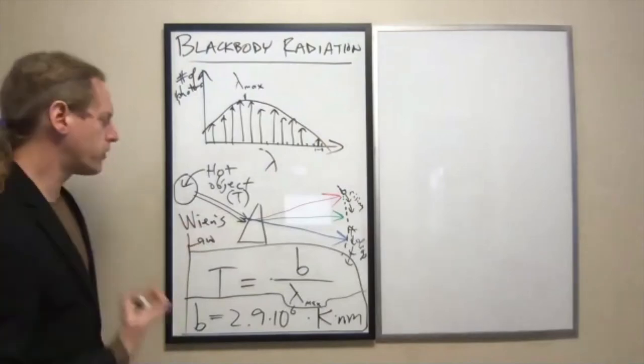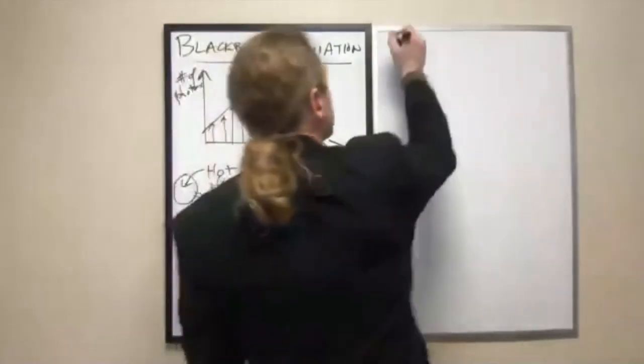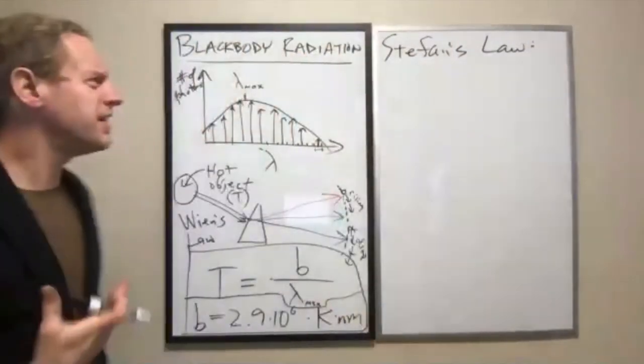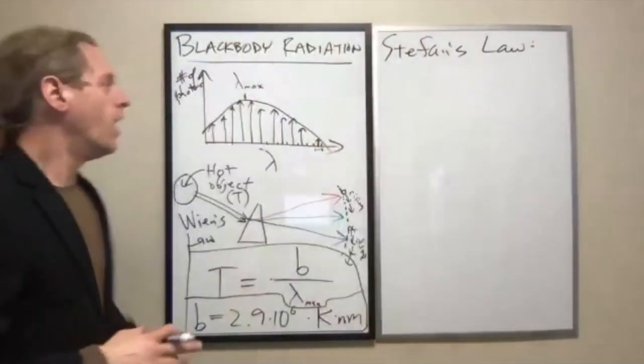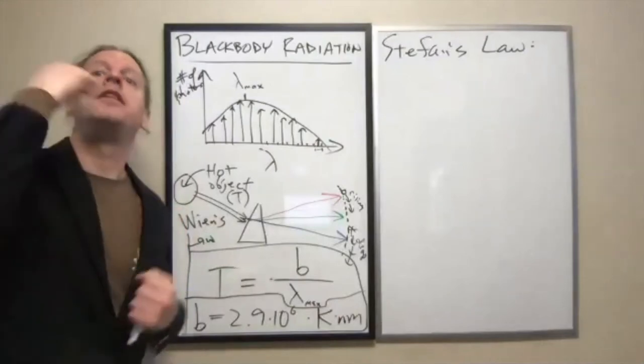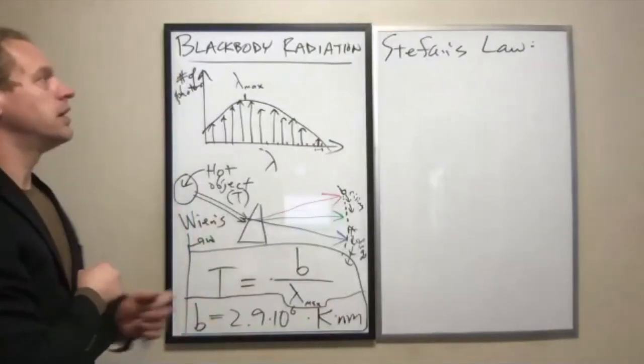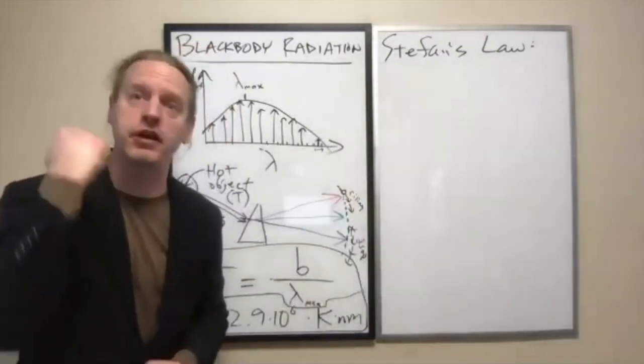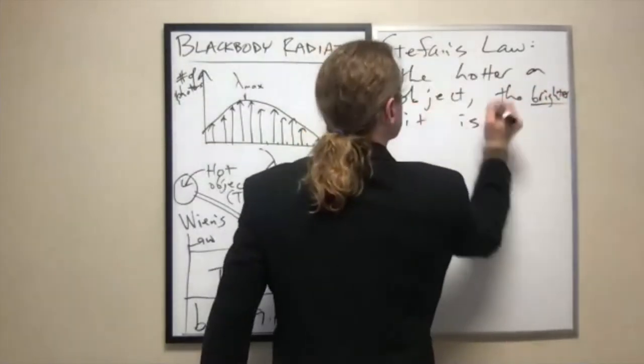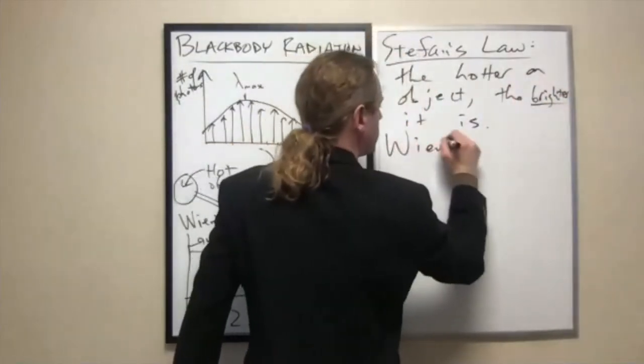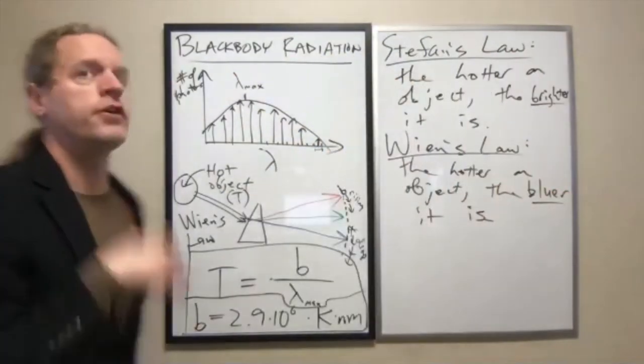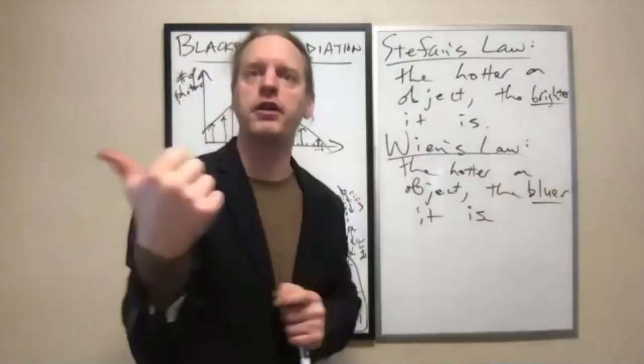And the other important result is what I call Stefan's Law. Which, without going into much detail, what Wien's Law says is that the hotter an object is, the bluer it looks. Stefan's Law says the hotter an object is, the brighter it is.